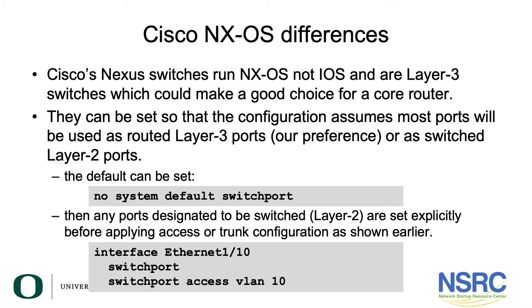To set the default to what we prefer, you say 'no system default switchport'. After setting this, any ports you want to be switched must be designated as layer 2 ports explicitly. For example, for Ethernet 1/10, you set the 'switchport' command to tell Nexus you want this to be a layer 2 port, and then you say 'switchport access vlan 10'.